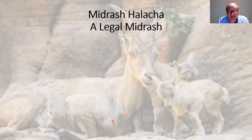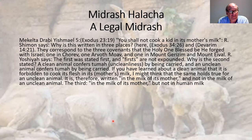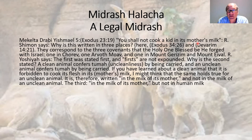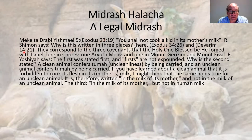Midrash halacha — a legal reading into the text. From Mechilta d'Rabbi Ishmael: we're told in the Bible 'you shall not cook a kid in its mother's milk.' Rabbi Shimon asks: why is this written in three places — Exodus 23, Exodus 34, and Deuteronomy 14? Because why would the Bible repeat the same thing three times?